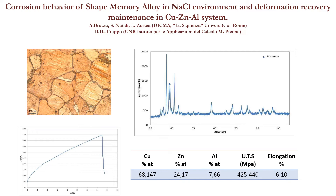The shape-memory alloy has been produced with a low-cost system. Pure metal has been melted in an electrical furnace under protective argon atmosphere and centrifugal casting. The obtaining of the shape-memory alloy has been studied under specific conditions.